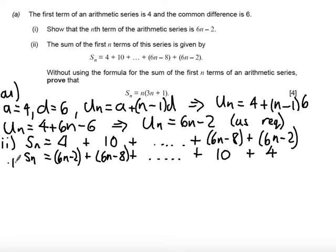Now at this stage if I add these two series together so I get the total of two summations of this series 6n minus 2 plus 4 gives us plus 2 so I get 6n plus 2. Now all the terms are going to be the same if you check minus 8 plus 10 is plus 2 so I get 6n plus 2.